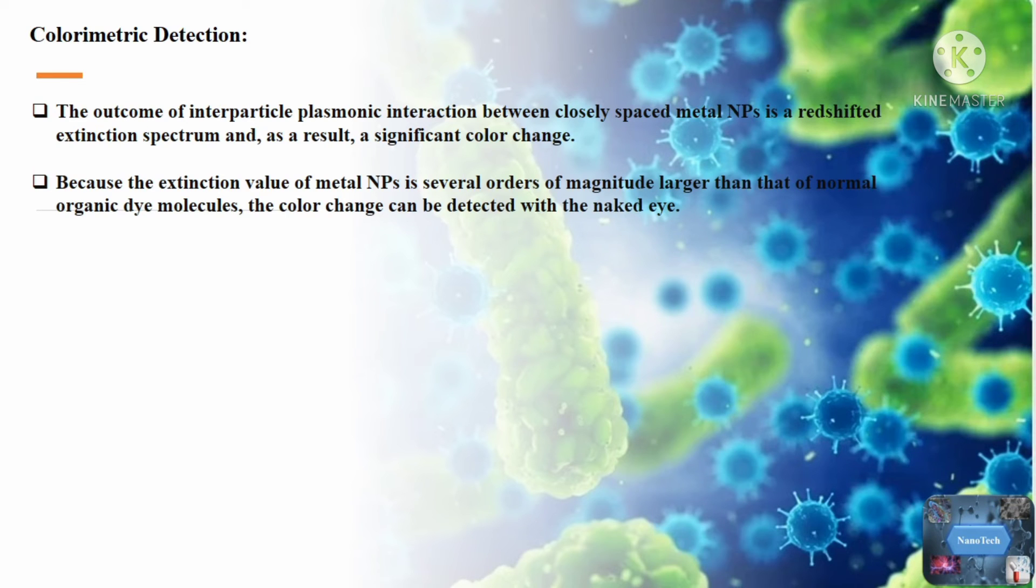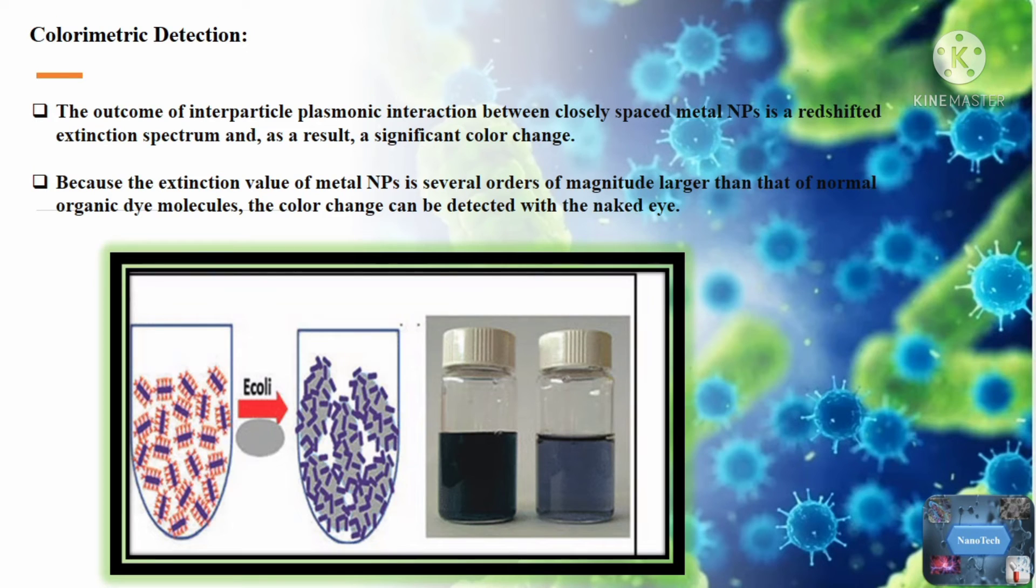Bacteria have negative surface charges on their membranes due to the presence of teichoic acids in gram-positive bacteria and lipopolysaccharides in gram-negative bacteria. After deposition of positively charged nanoparticles onto the surface of bacteria, a strong electrostatic interaction occurs. As a result, the formation of nanoparticle aggregates on the surface of bacteria causes the color of nanoparticles to change.